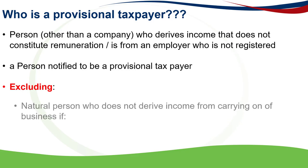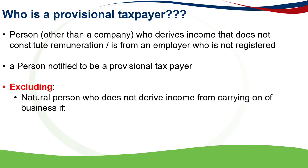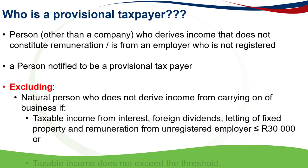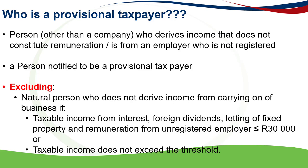The exclusion applies if taxable income from foreign dividends, interest, letting of fixed property, and remuneration from an unregistered employer is 30,000 or less, or the taxable income does not exceed their tax threshold.